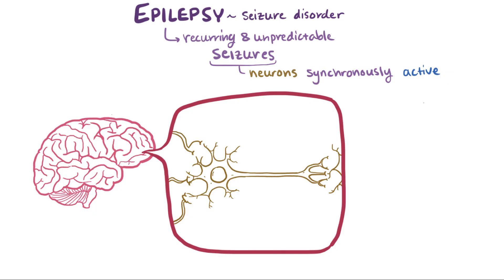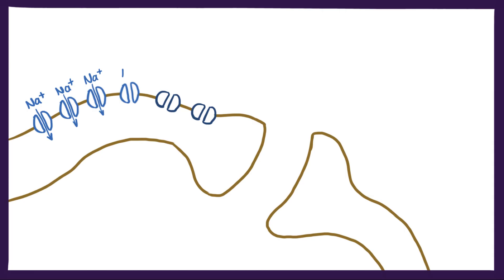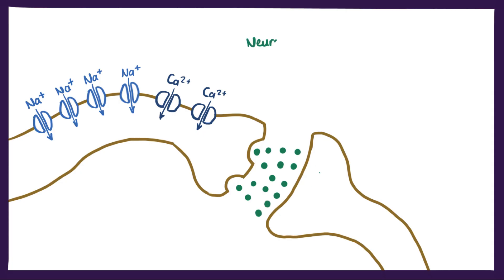When neurons are active, they're firing or sending a message using electrical signals relayed from neuron to neuron. If you look at a neuron under a microscope, each electrical signal that passes through it is really just ions flowing in and out through protein channels. The way this ion flow is controlled is through neurotransmitters, a type of signaling molecule, and receptors.